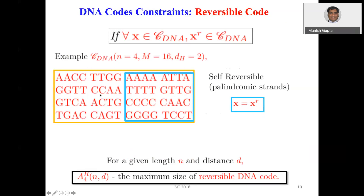For example, in this DNA code you can take any string and verify it has its reverse inside the set. The blue block here contains palindromic strands — the self-reversible strings, where the reverse of AAAA is AAAA itself, and reverse of TTT is TTT itself. Just as we study A_q(n, d) in classical coding theory, here we study A_4^r(n, d), the maximum size of a reversible DNA code for given length n and distance d.